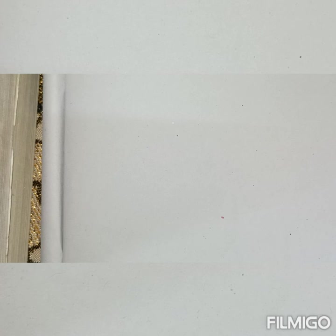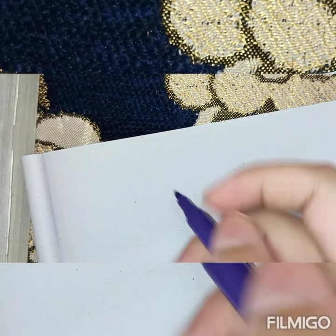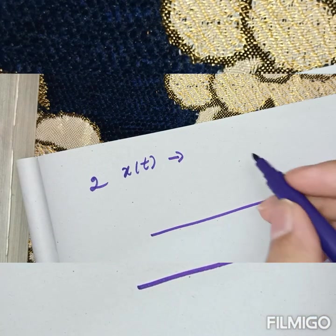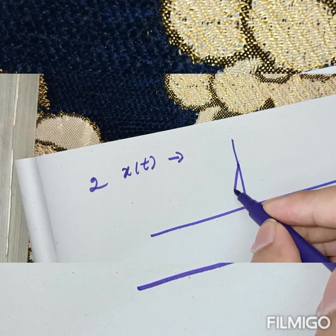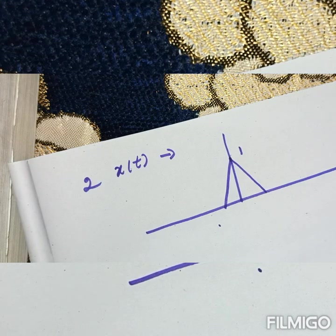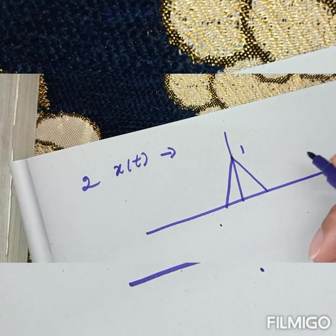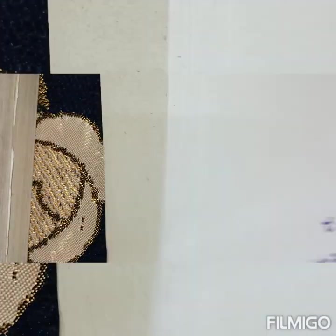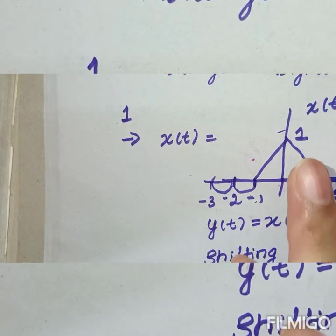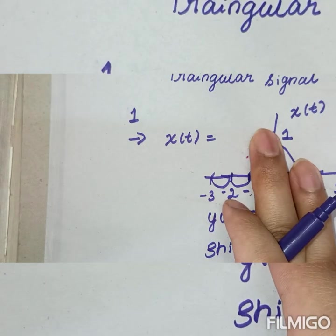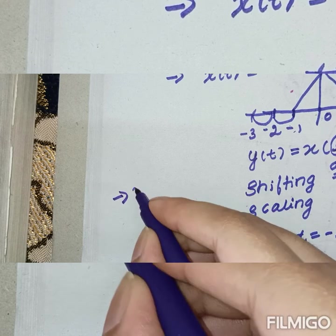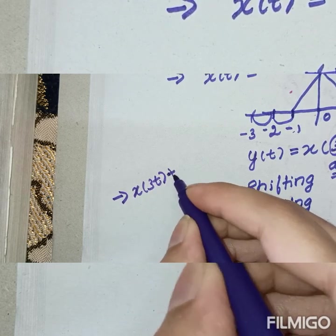Now let's move to question number 2. He has given the same continuous signal x of t as in the first question. He is asking you to do the operation x of 3t plus x of 3t plus 2. We already have x of 3t plus 2 from the previous result. Now we need to separately find x of 3t.